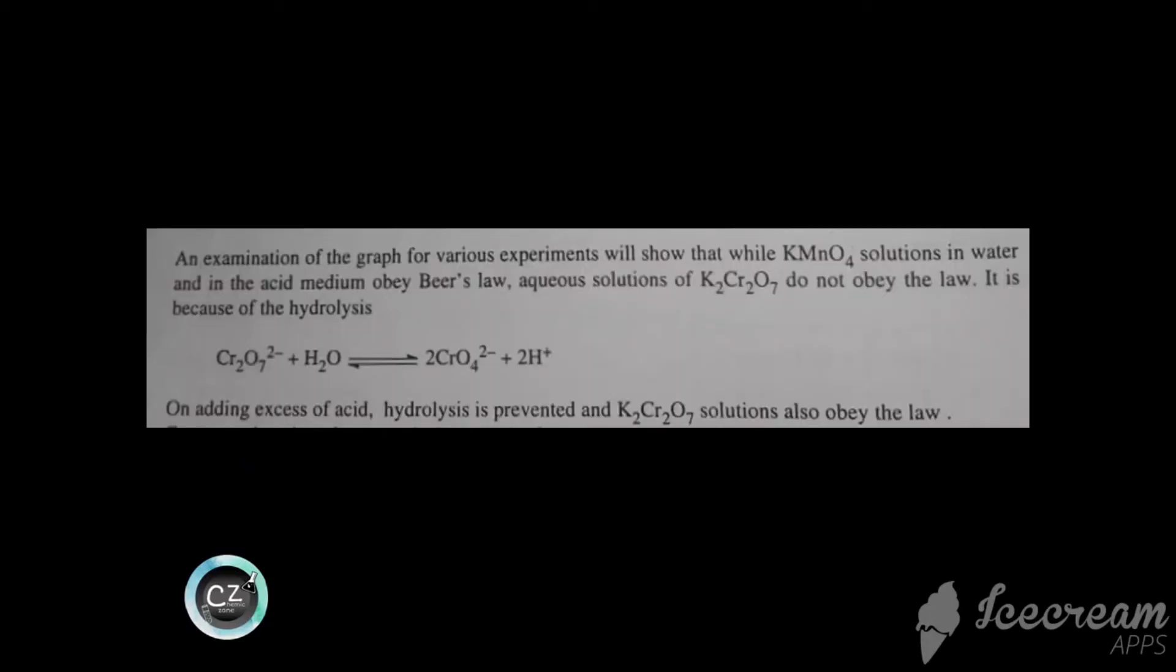However, when potassium dichromate reacts with water, it ionizes and forms potassium chromate, which is a different compound. This is why aqueous solutions of potassium dichromate do not obey Beer-Lambert's law.